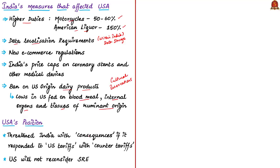Now let us see the current position of USA, which is the oldest democracy in the world, and India, which is the largest democracy in the world. To address the tariffs issue by USA, India is threatening to impose counter tariffs on USA's products. The USA Secretary of Commerce has openly threatened that such a move by India will definitely lead to consequences.